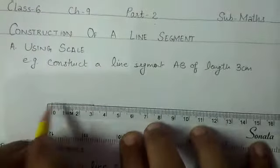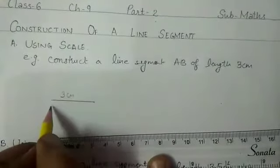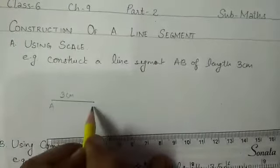Now join these points. Now we will get a line segment equal to 3 centimeter. As we are given the name as AB, so we will write here AB.